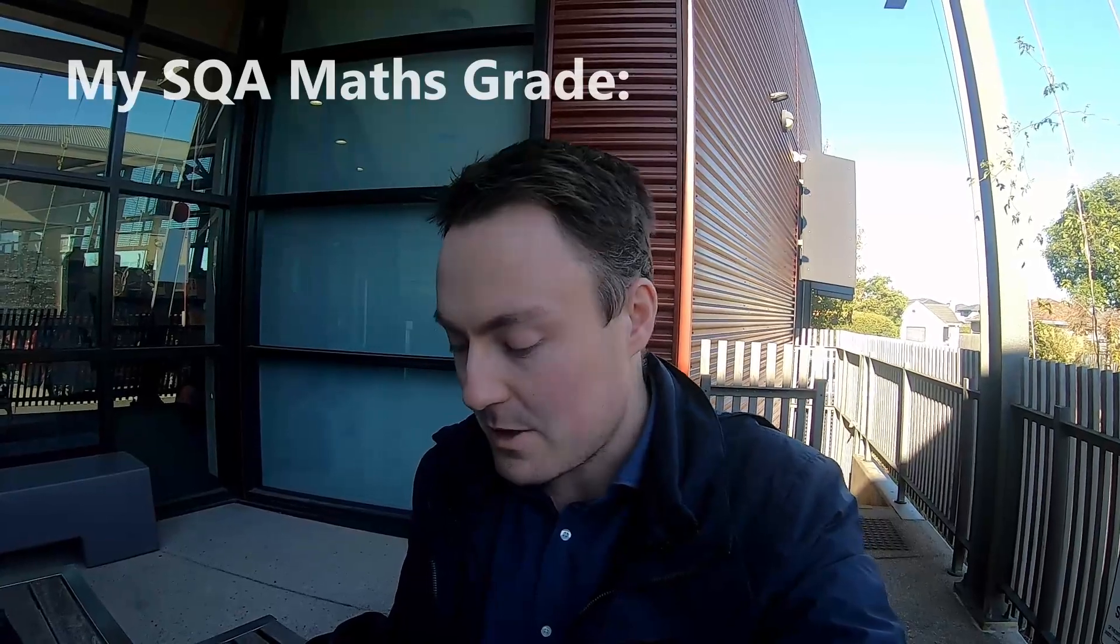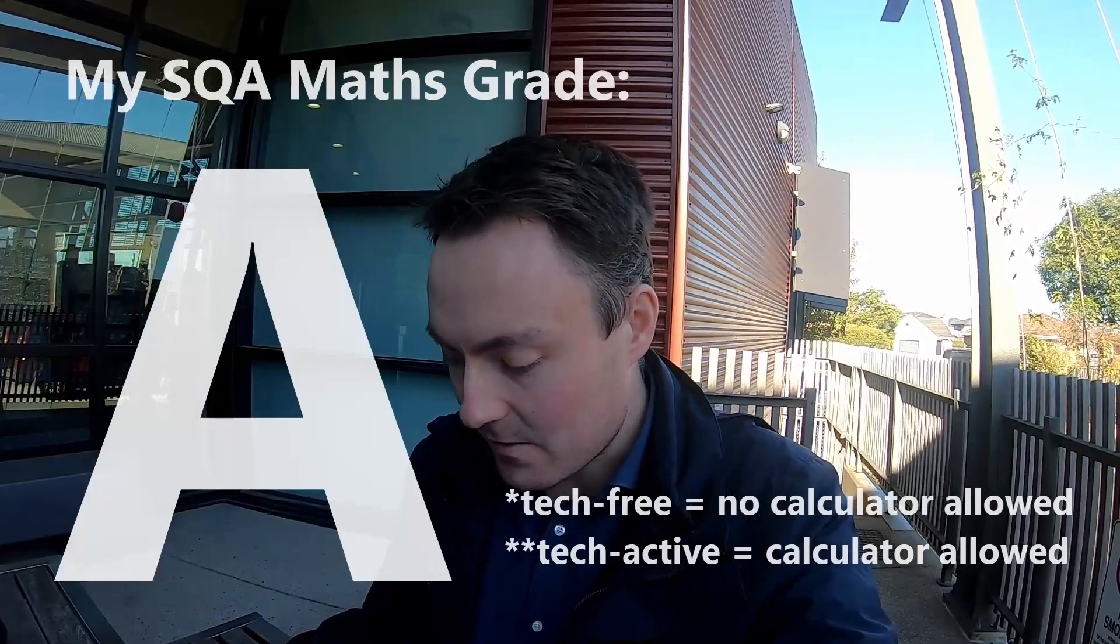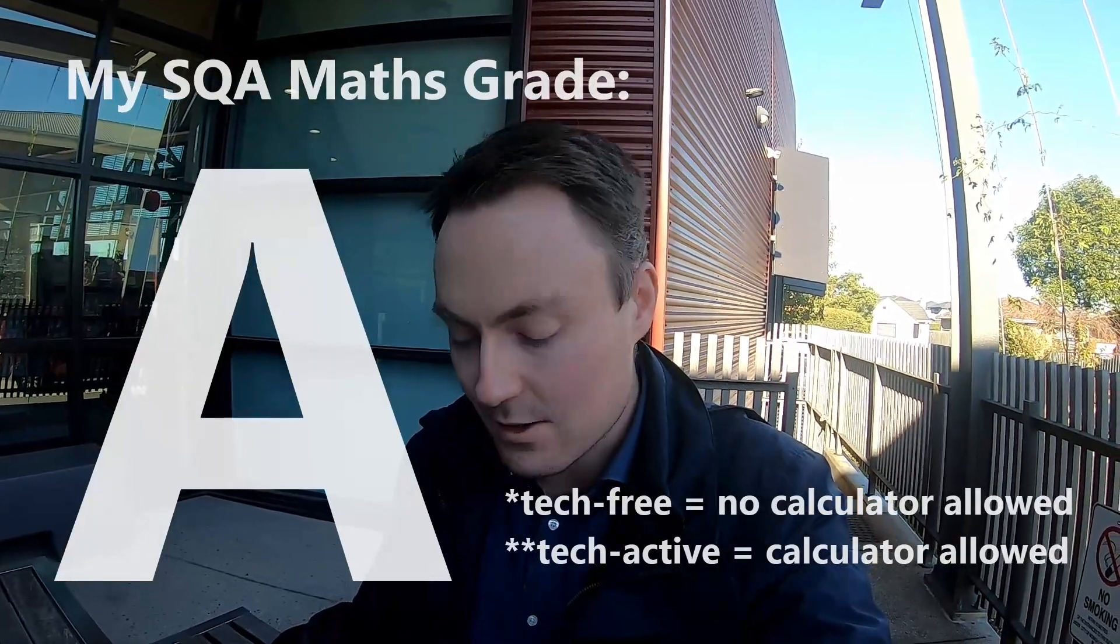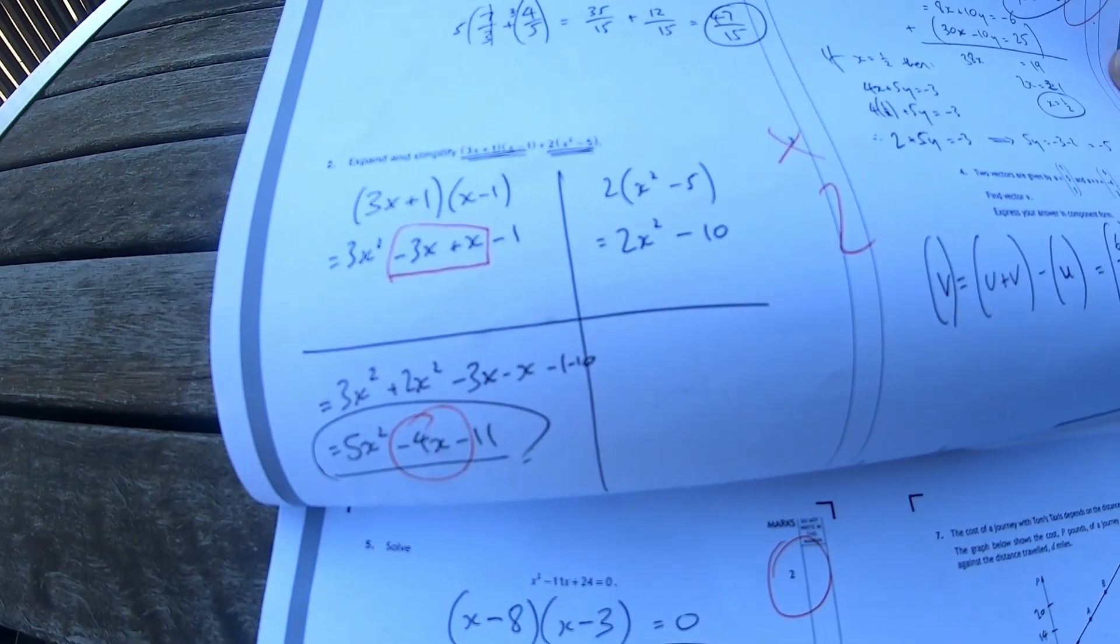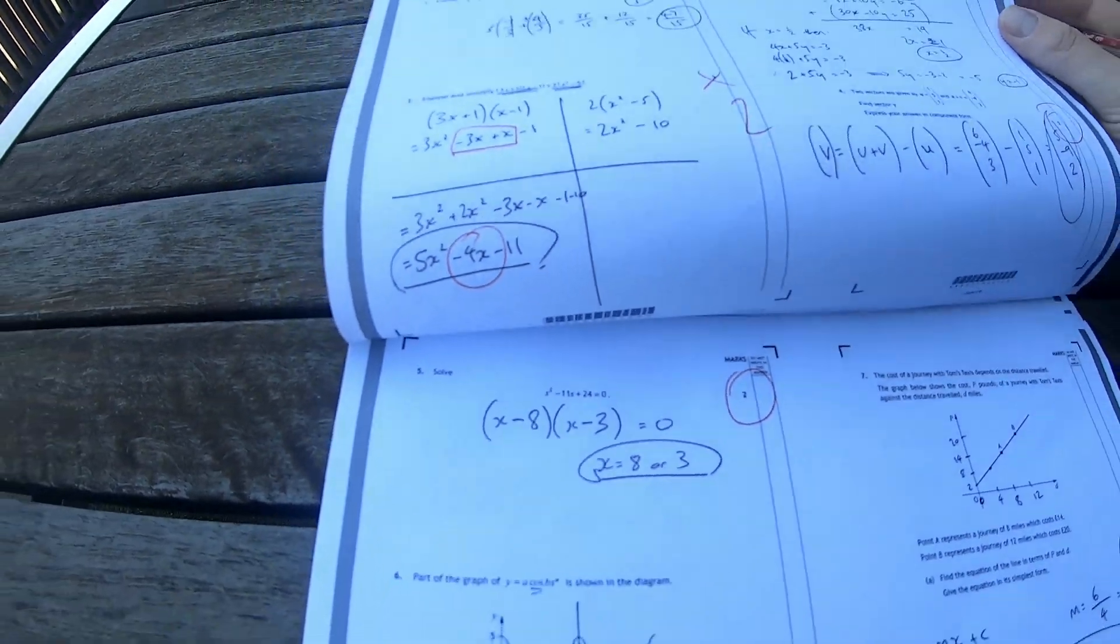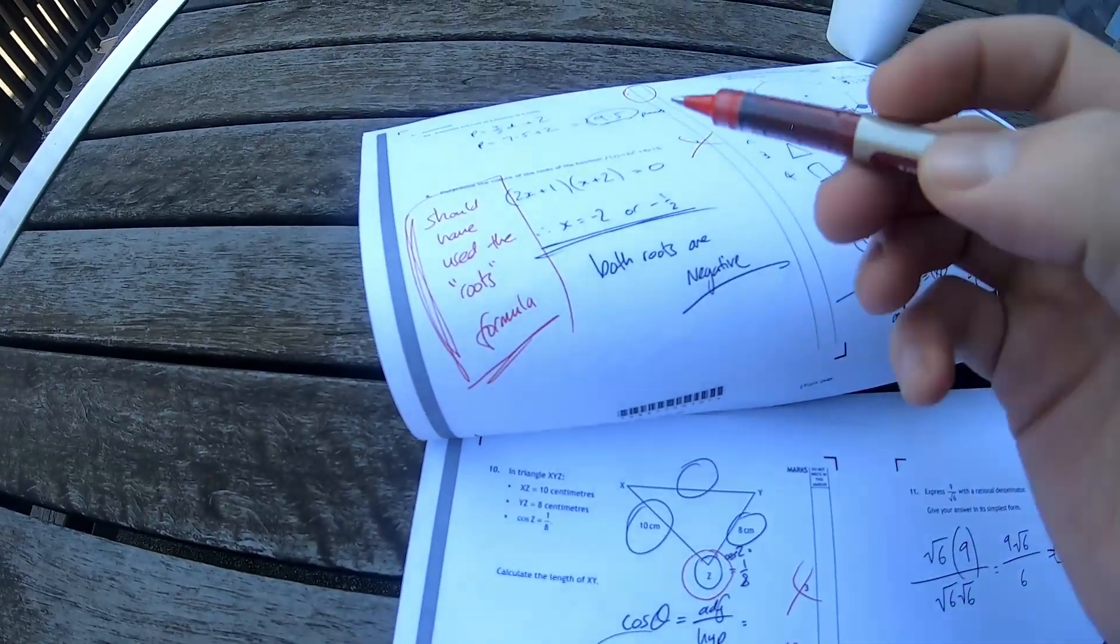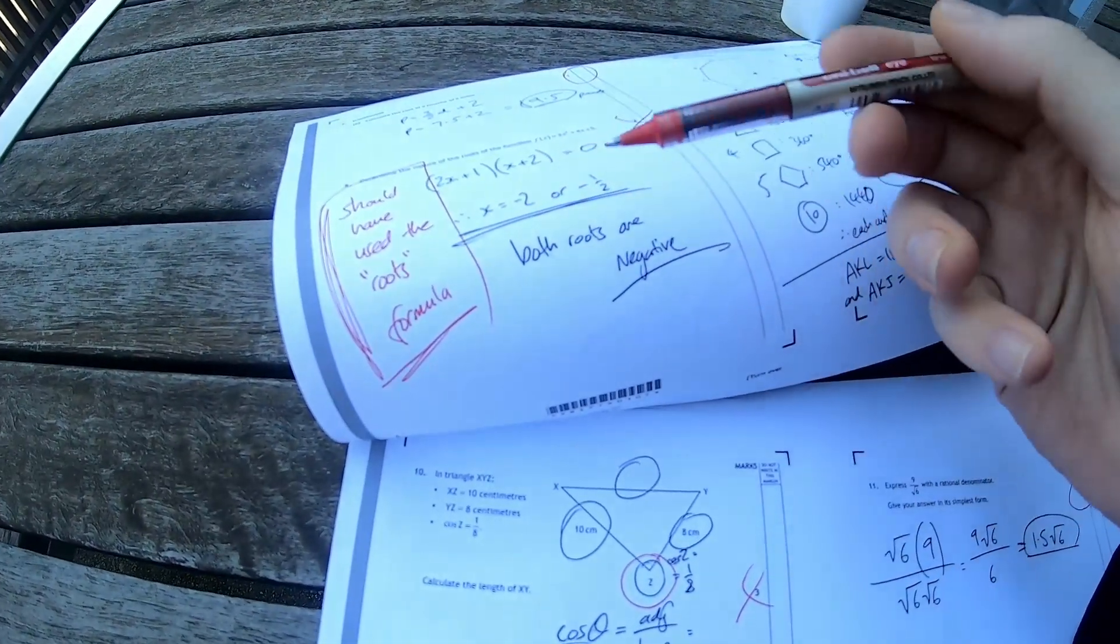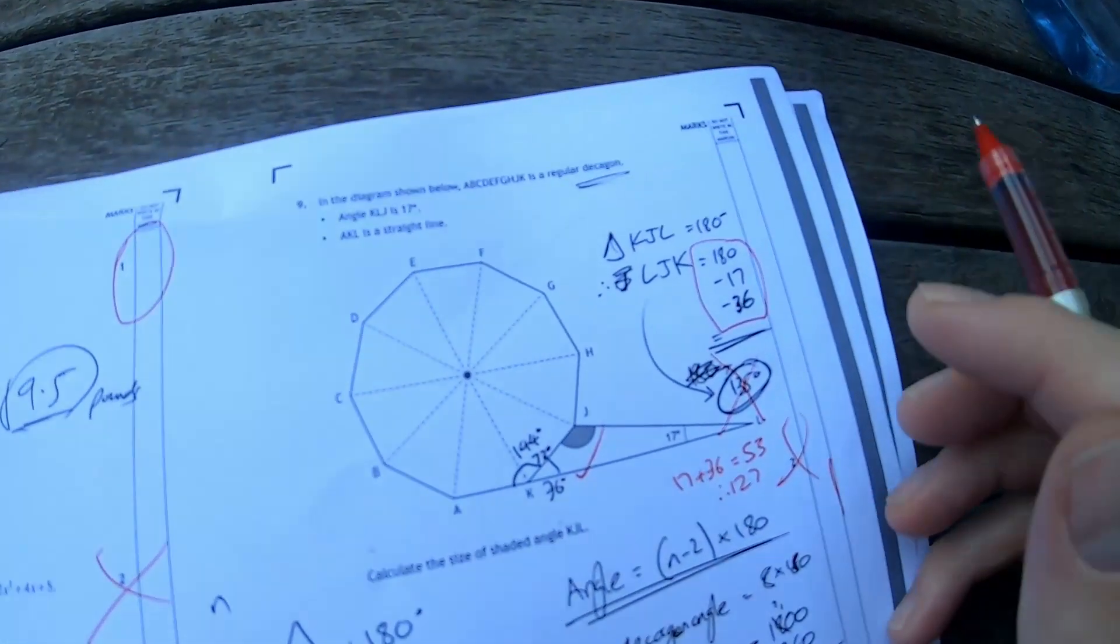So I've just had both those maths papers marked and I've achieved an A in both the tech free and the tech active, but I'm not satisfied with my percentage score. It was an A but I've made some really dumb mistakes. I just want to show you what they are. First one here, look at that, minus 3x plus x is actually minus 2x not minus 4x. So I lost a mark there.